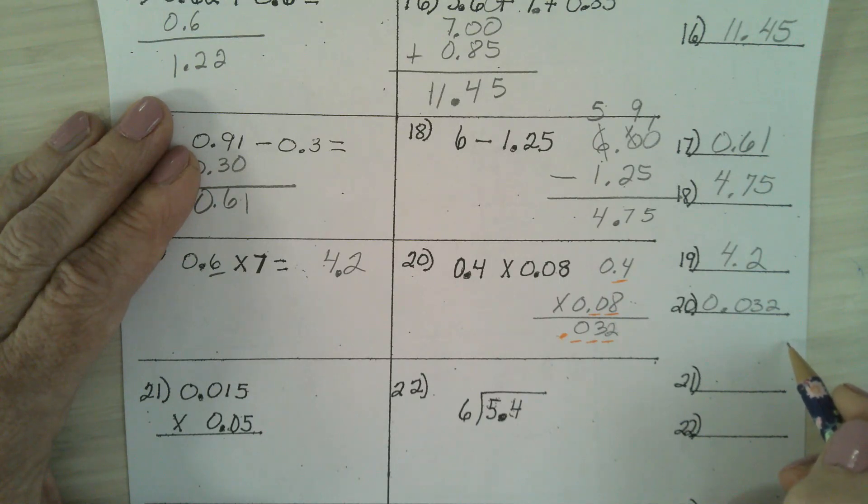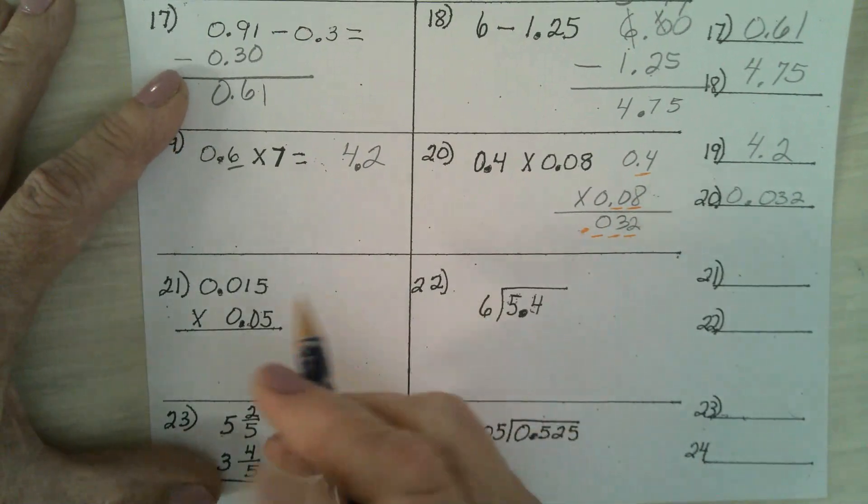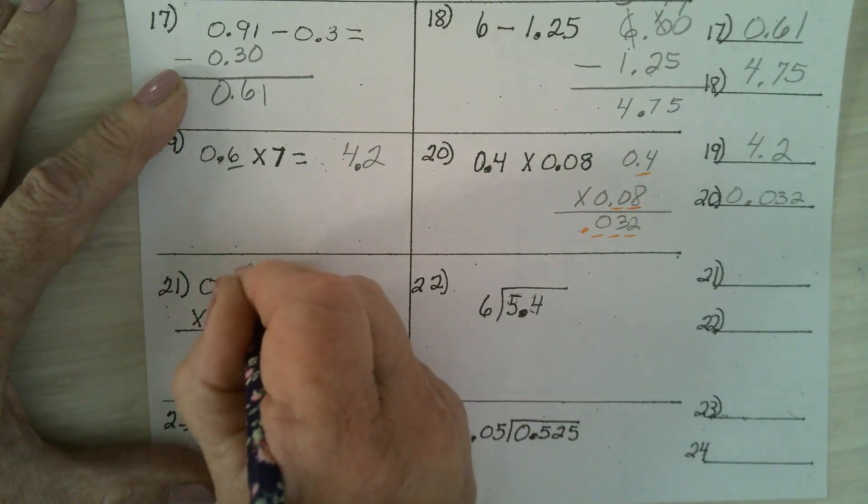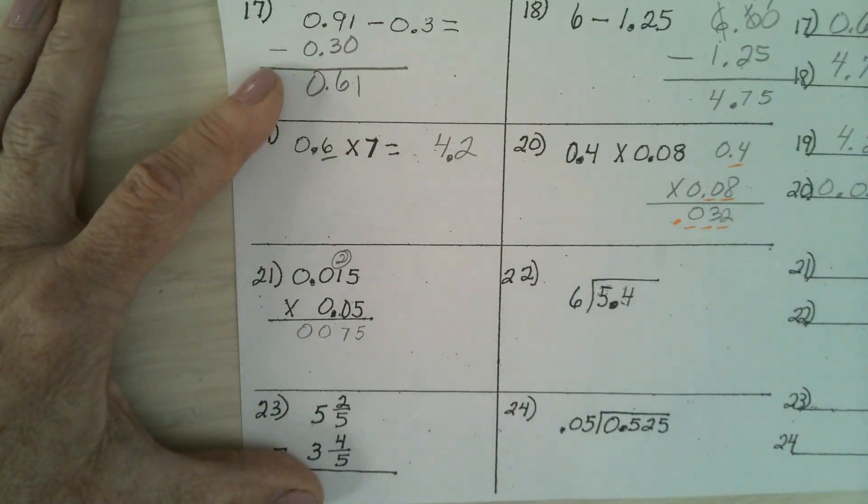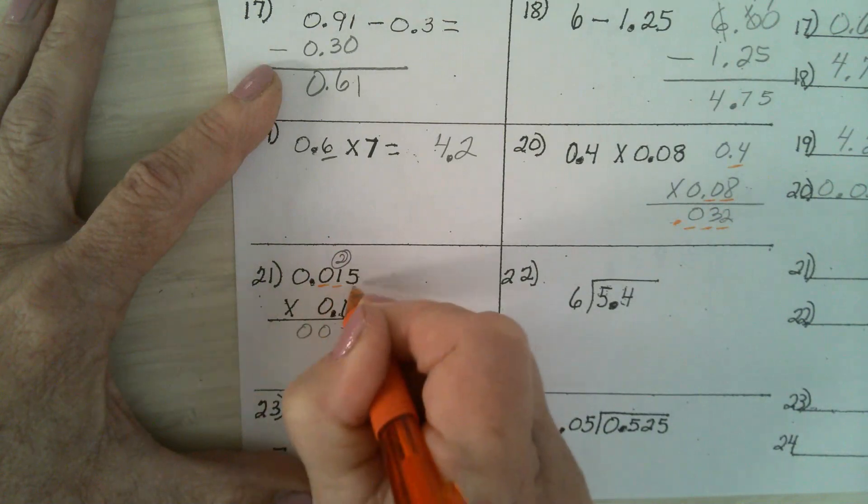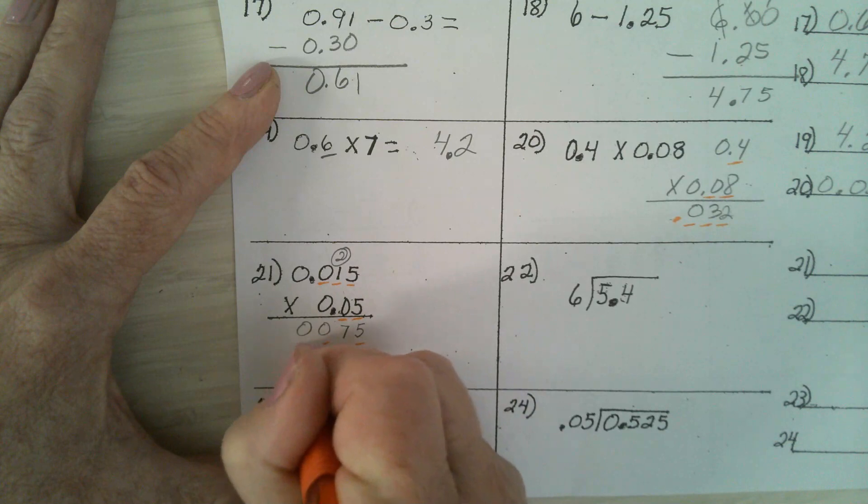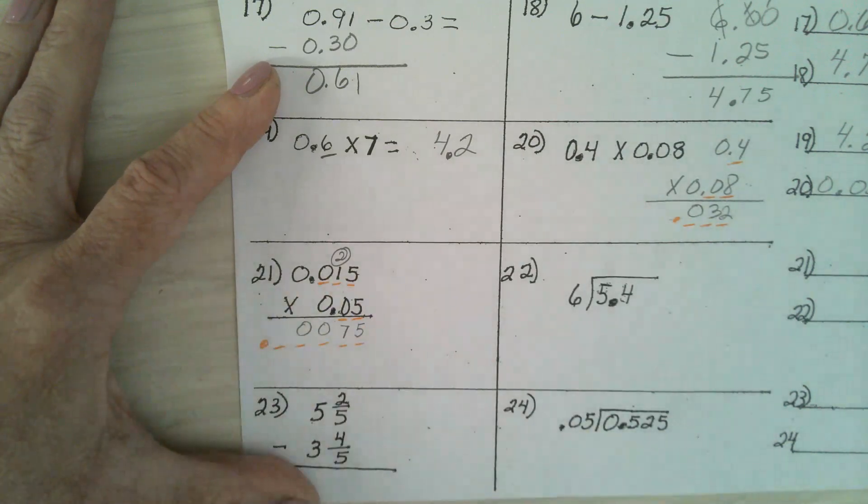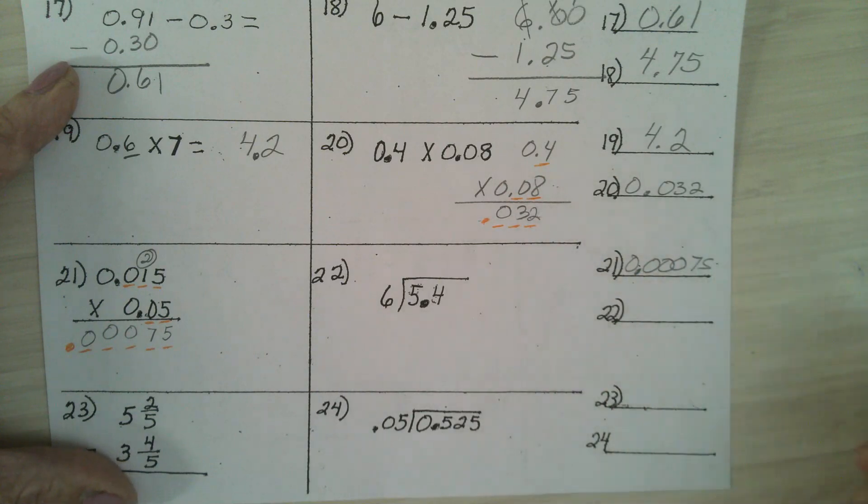Write this down. Not just the answer. How to get the answer. You should have the underlines under the problems. Number 21. 0.015 times 0.05. 5 times 5 is 25, put down a 5, carry a 2. 5 times 1 is 5, plus 2 is 7. Then you can say 5 times 0 is 0. How many numbers are behind the decimal point in the problem? 1, 2, 3, 4, 5. This is where some of you messed up. 1, 2, 3, 4, 5. You've got to put another zero on that blank. So in that one it is 0.00075. Tenths, hundredths, thousandths, ten thousandths. It's 75 hundred thousandths. Any questions on that problem?